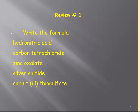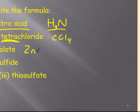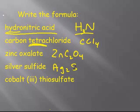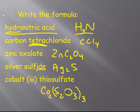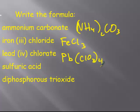We're going to write formulas. If you're lost, go back and watch the videos. Hydronitric acid — 'hydro' tells us it's binary and 'nitro' tells us it involves nitrogen, so binary meaning only two elements: plus one, minus three, giving us H3N. Carbon tetrachloride — those prefixes tell us it's a molecule and indicate how many. Zinc plus two with oxalate, which is minus two (C2O4), so plus two minus two. Silver sulfide: binary, IDE ending, plus one minus two. Cobalt thiosulfate: cobalt three requires parentheses, since thiosulfate is minus two — check your polyatomic ion list.